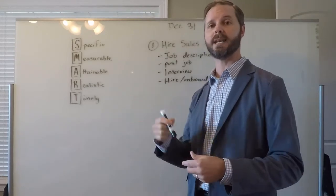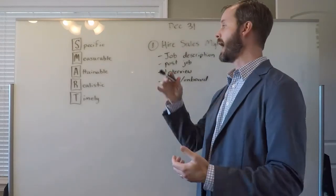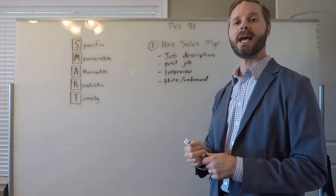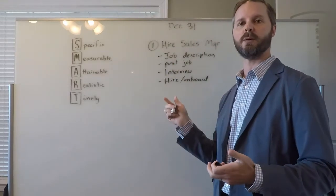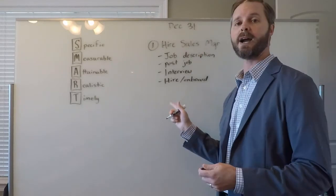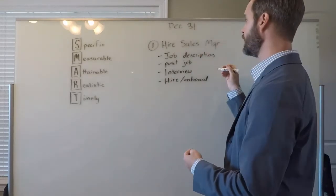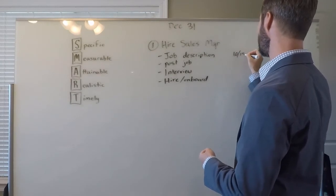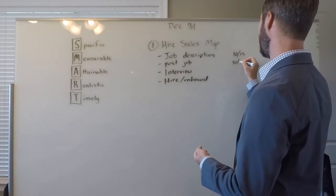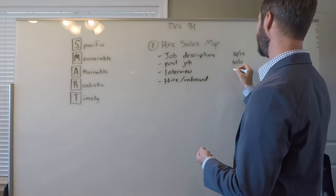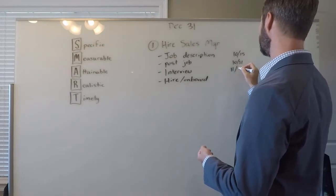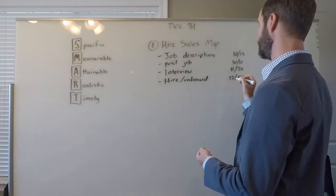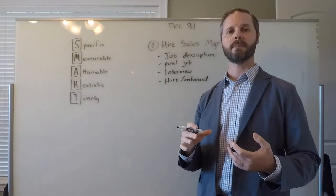We can look at any point during the process and say, hey, are we on track with this? So we know the whole rock is due December 31. Let's go ahead and put some due dates for these bullet points. If we want to have this person hired by December 31, maybe we need to have the job description written by 10-15. Maybe it needs to be posted by 10-31. We need to be interviewing by 11-20. And we need to have this person hired by 12-15. This is just an example of how we can make a rock smart. Specific, measurable, attainable, realistic, and timely.